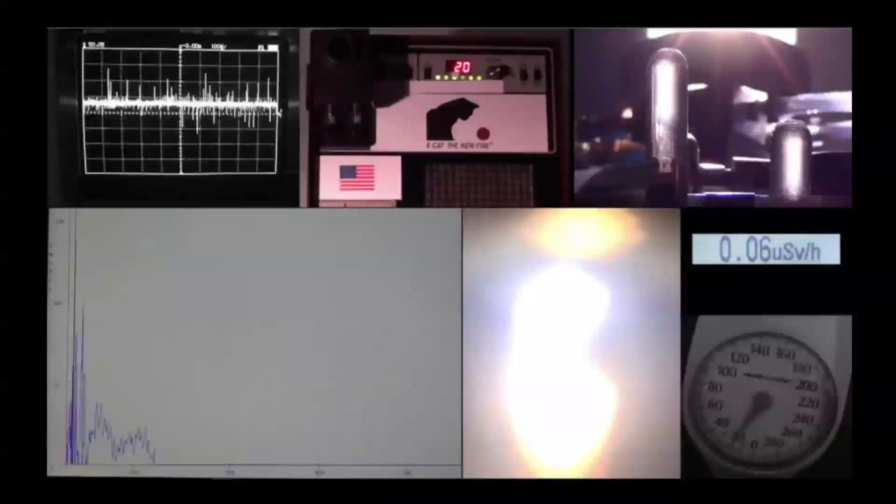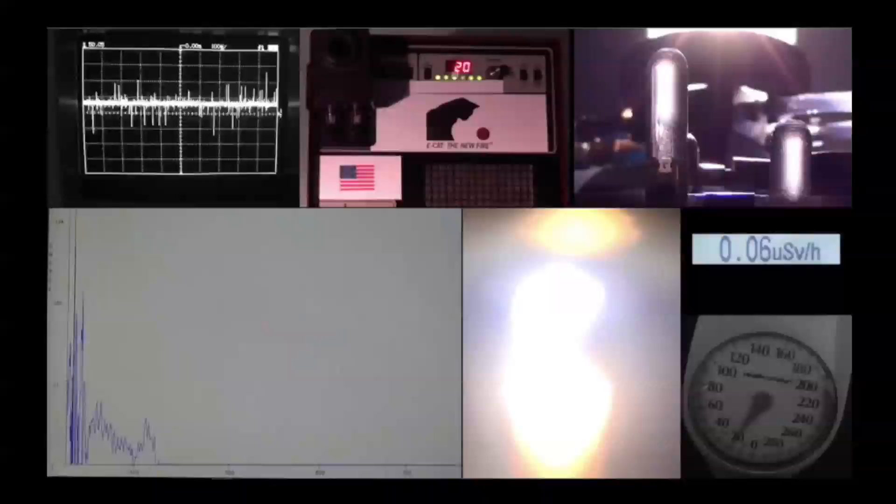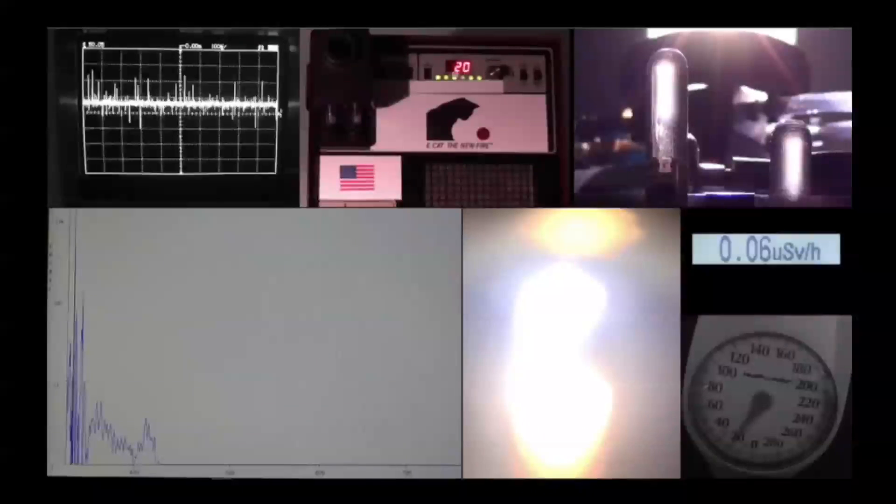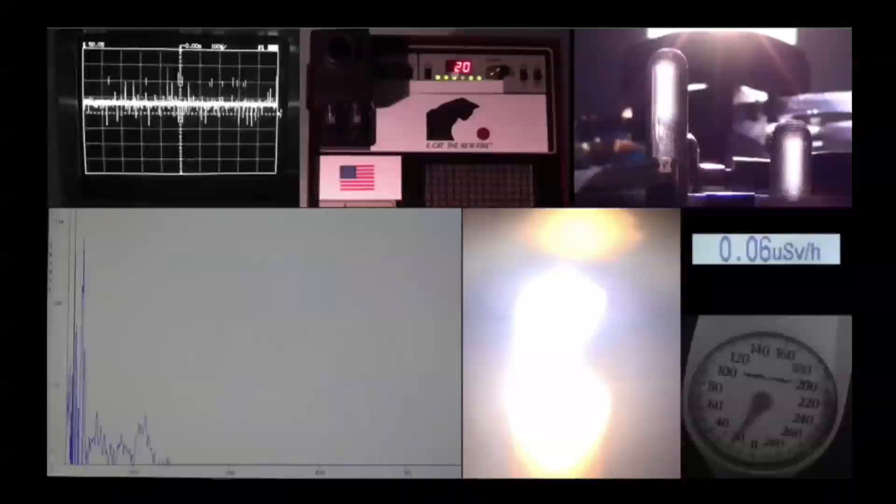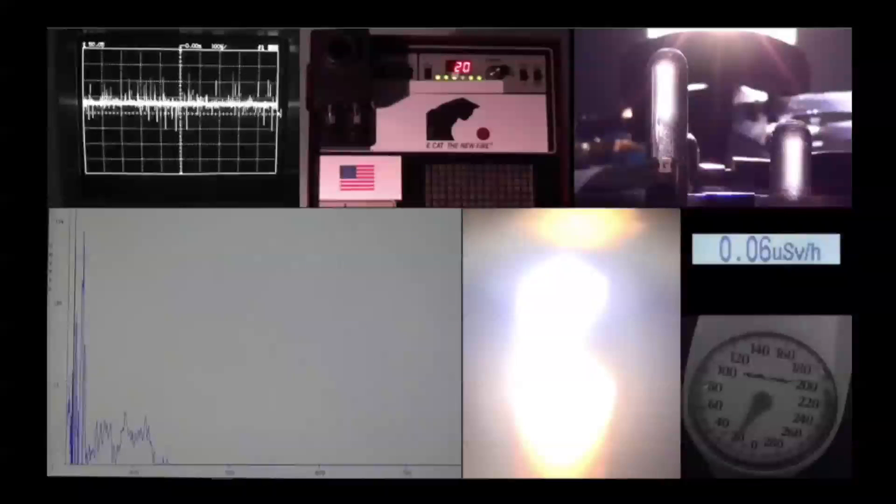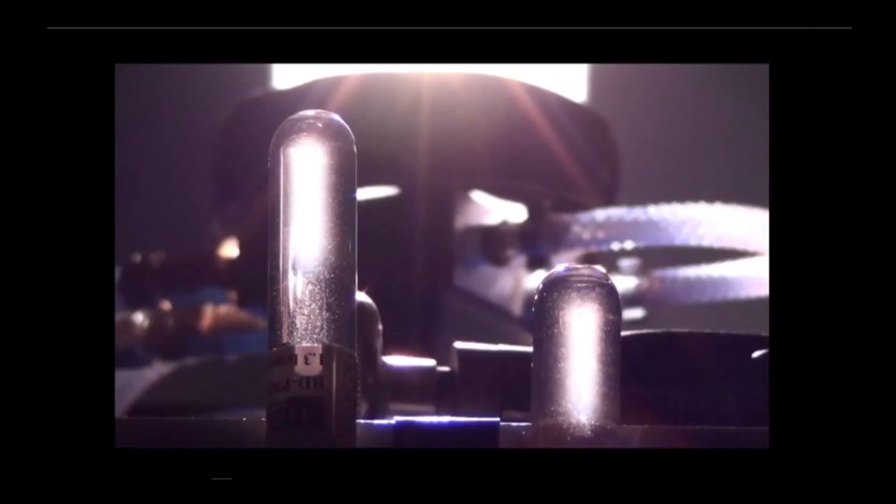View number 3 is in the upper right corner of the screen. Here are shown the bubble columns to detect the emission of neutrons. No emission of neutrons has been detected beyond the background.